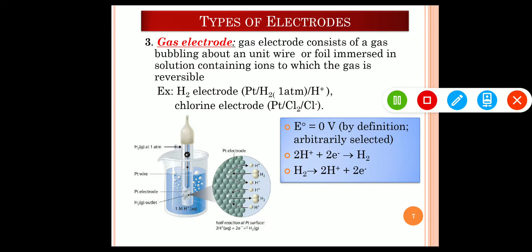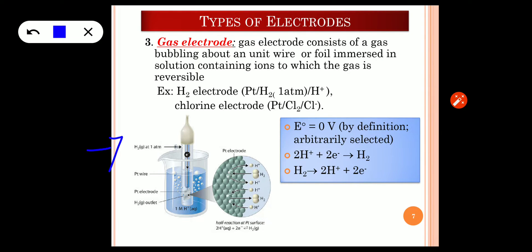The third type is the gas electrode. The hydrogen electrode is an example and is used as a primary reference electrode. The name 'gas electrode' is given because hydrogen gas is bubbled at 1 atmospheric pressure inside the electrode. Its reduction potential is exactly 0. It can either undergo reduction — accepting electrons — or undergo oxidation, depending on the electrode potential of the combining electrode.